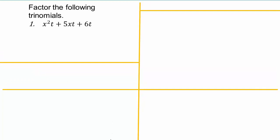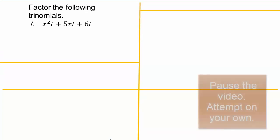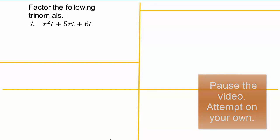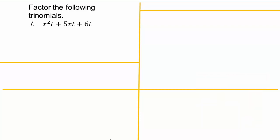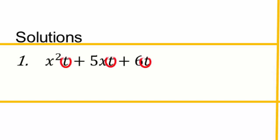Let's do some more practice. For every question, pause the video. Remember the steps: factor out the greatest common factor first, then use factor by grouping on whatever trinomial remains, then complete the factoring. All of these terms share a t, so let's factor out the t.